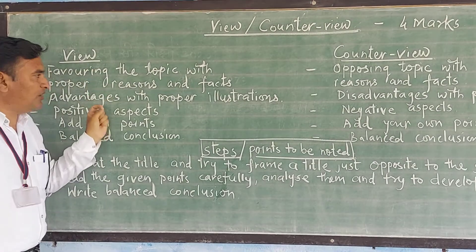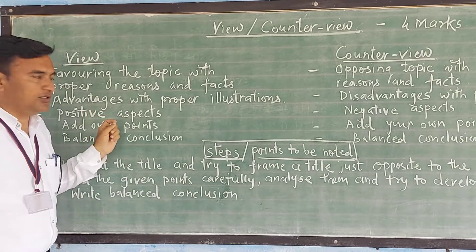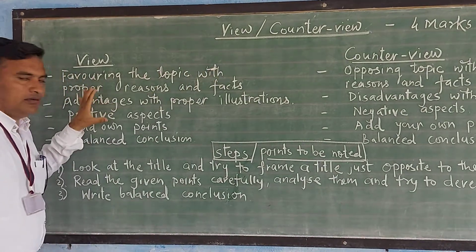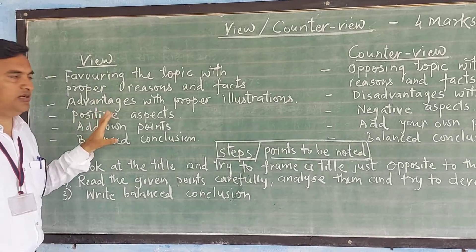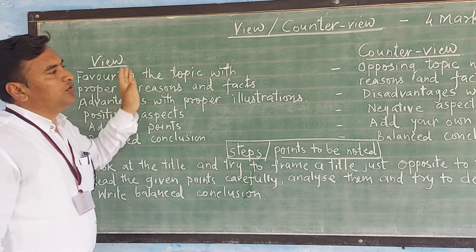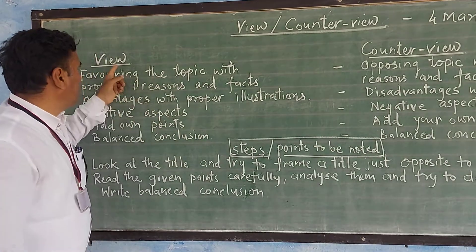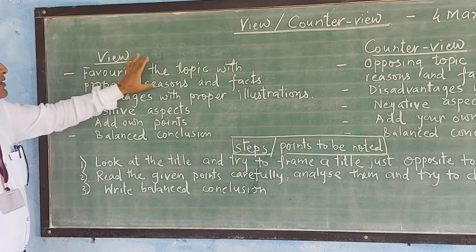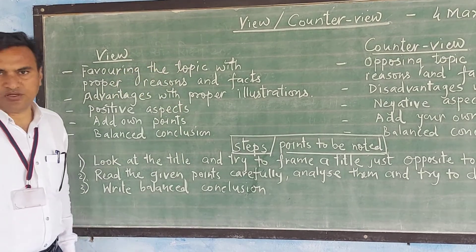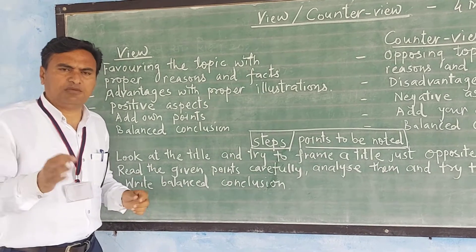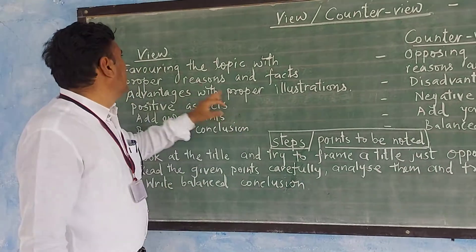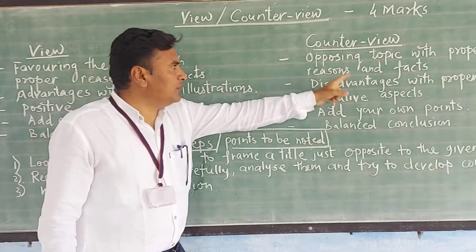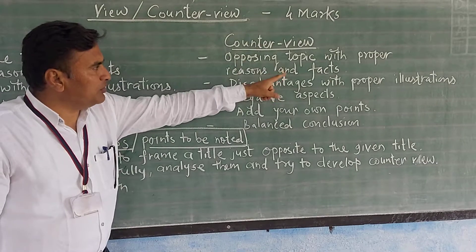In the view section, only points are given to you, and many students just narrate those points. That is a common mistake — don't narrate the points as given in the view section of your activity set. We have to develop the counter view. View section means it is in favor of the topic with proper reasons and facts. Any issue or subject — maybe political, educational, or social — the view is in its favor. But you have to develop the counter view, which is opposing the topic, against the subject, with proper reasons and facts.